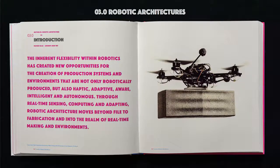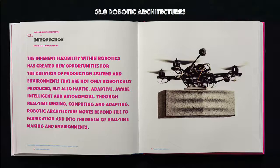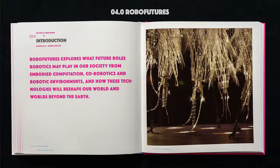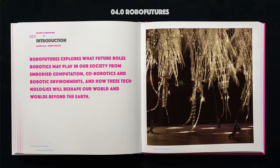The second chapter is Robotectonics, which looks at more built projects and how they're beginning to reshape the tectonic form of architecture through material and form. The next chapter is Robotic Architecture, and it begins to look at the next scale up — how architecture itself is beginning to change based on the introduction of robotic systems into the built environment. The last section of the book is dedicated to robotic futures, looking at how we can move beyond industrial robots into robotic environments and speculating on how robots will reshape our world, and worlds beyond — Mars is always in these dialogues.